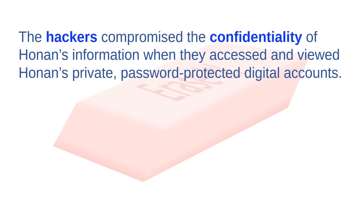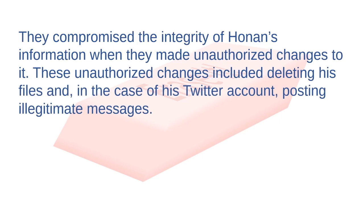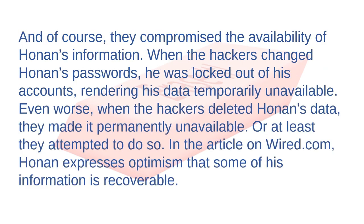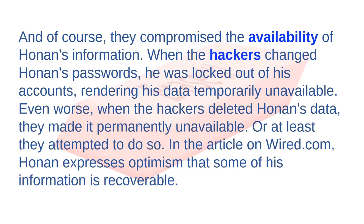This attack compromised Honan's information on all three levels of the CIA model of information security. The hackers compromised the confidentiality of Honan's information when they accessed and viewed his private, password-protected digital accounts. They compromised the integrity of his information when they made unauthorized changes — including deleting his files and posting illegitimate messages on his Twitter account. They compromised availability when changing his passwords locked him out of his accounts.